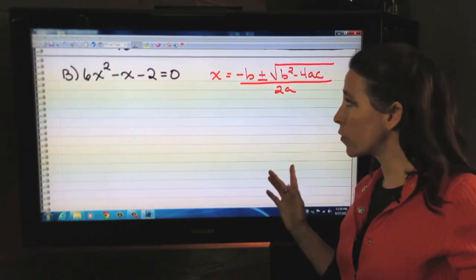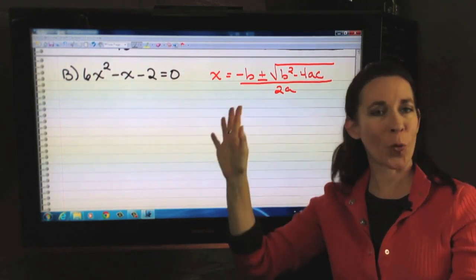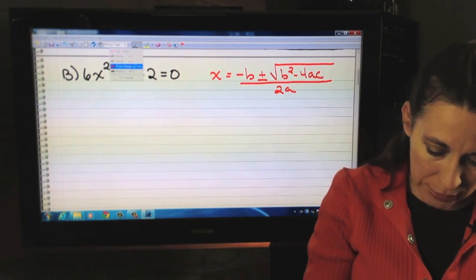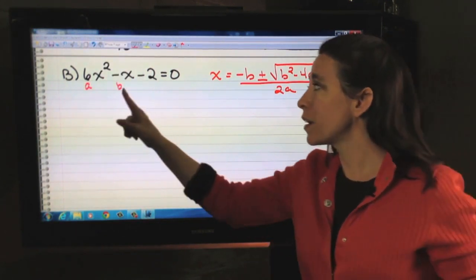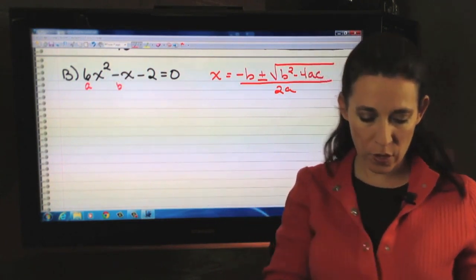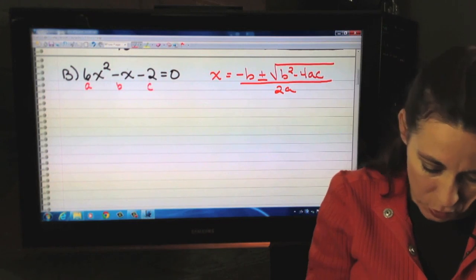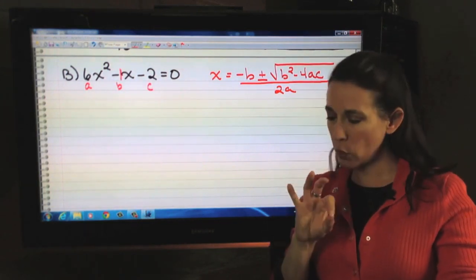Let's take a look at the next one. Again, quadratic formula, already written. Quadratic equation, already set equal to 0. So we can label our A, B, and C. Now, notice the B here is not the X. It's the negative 1 in front of the X, and your C. So if you need to write that 1 in there, just so you can visualize it, go for it.